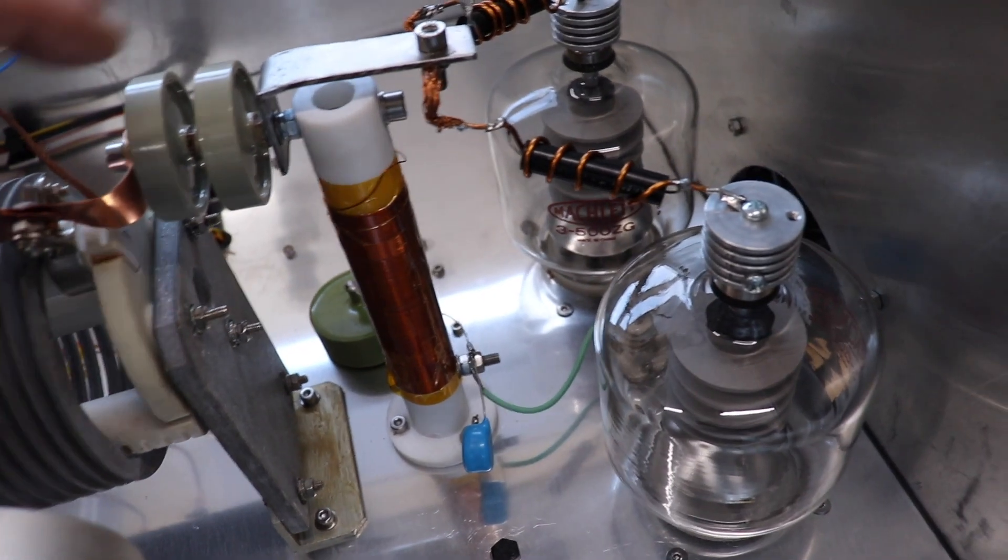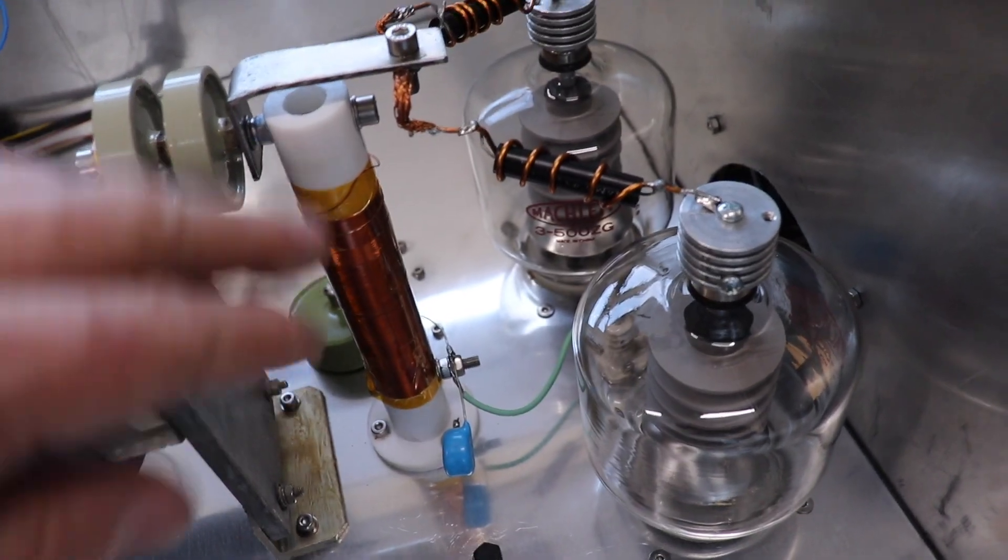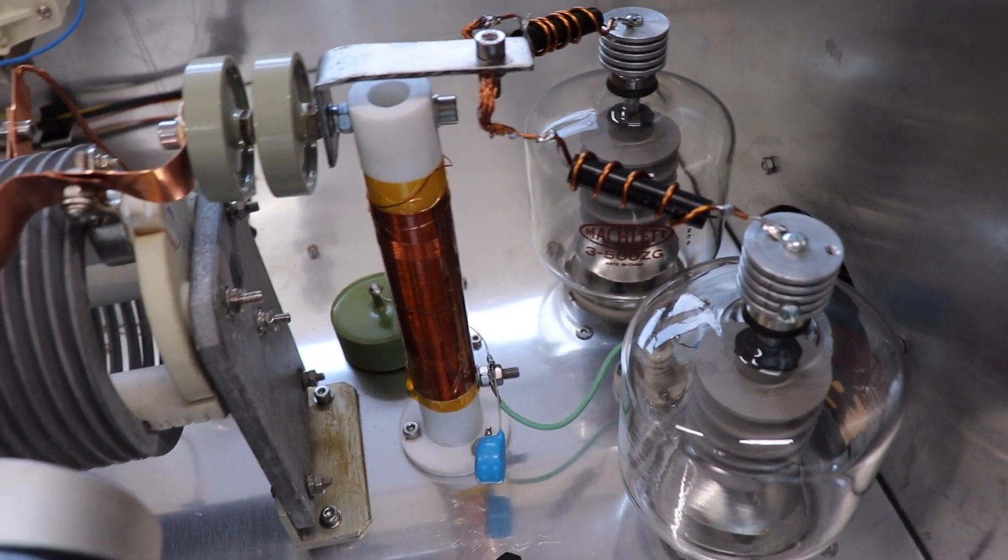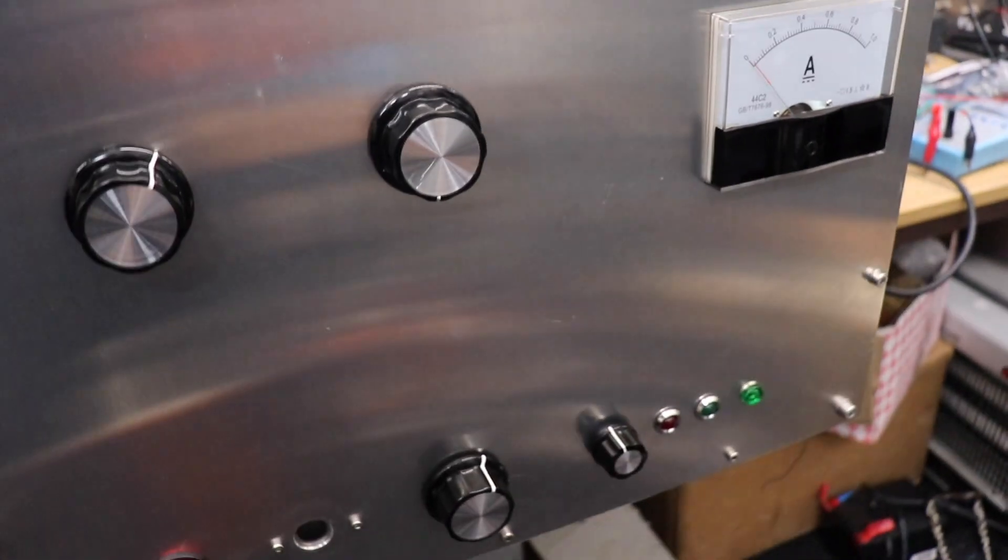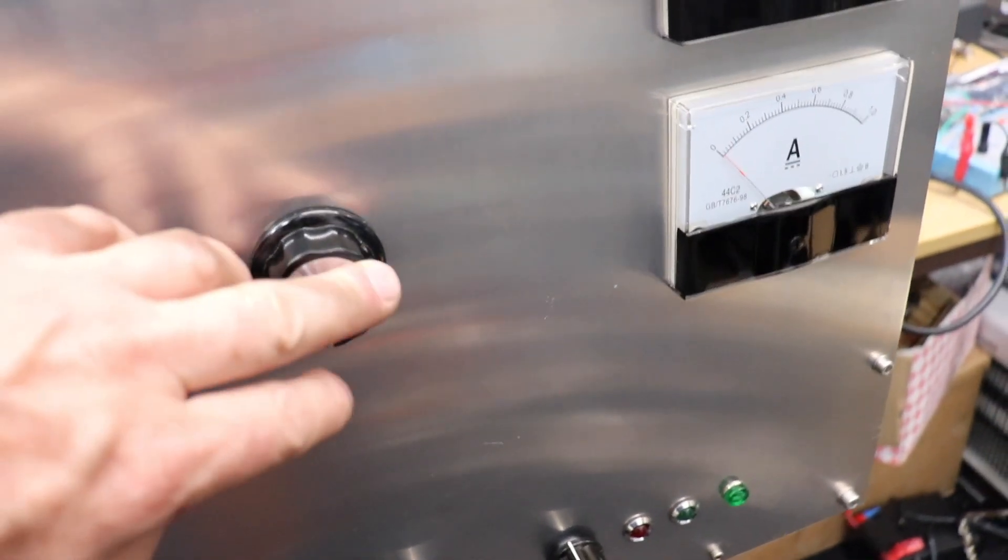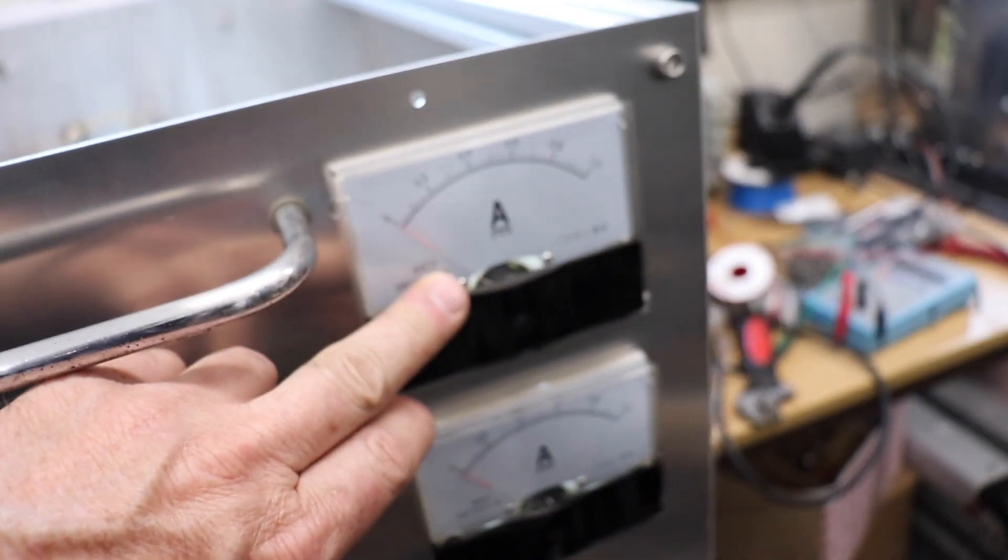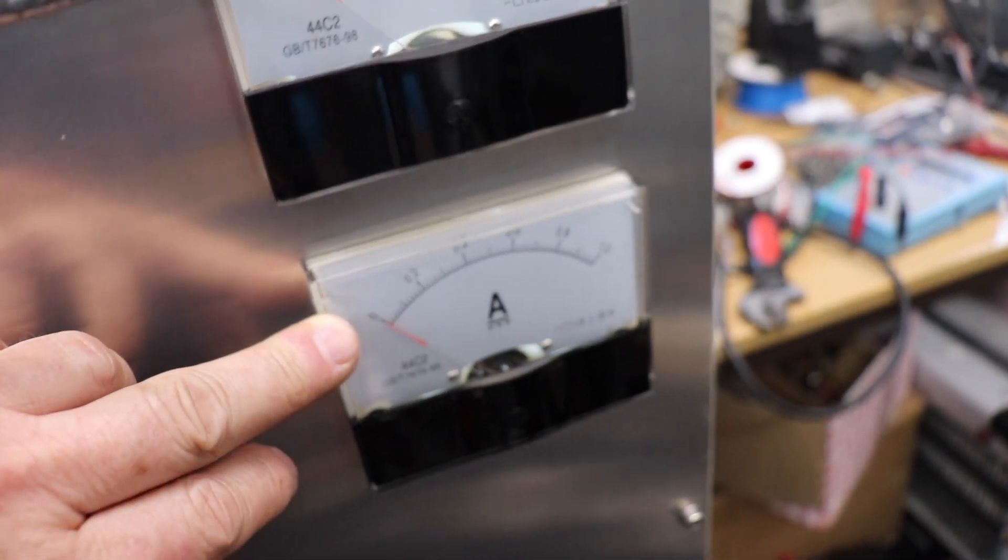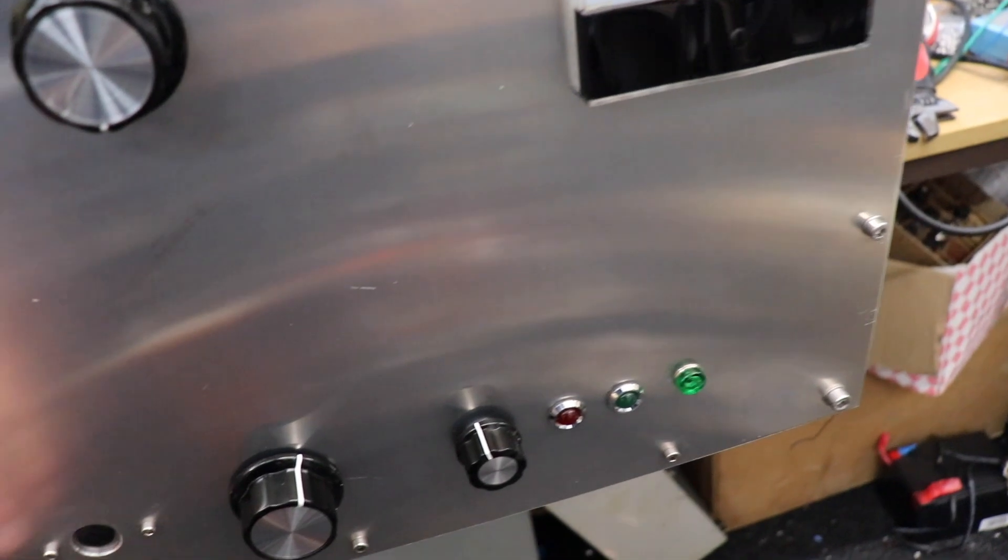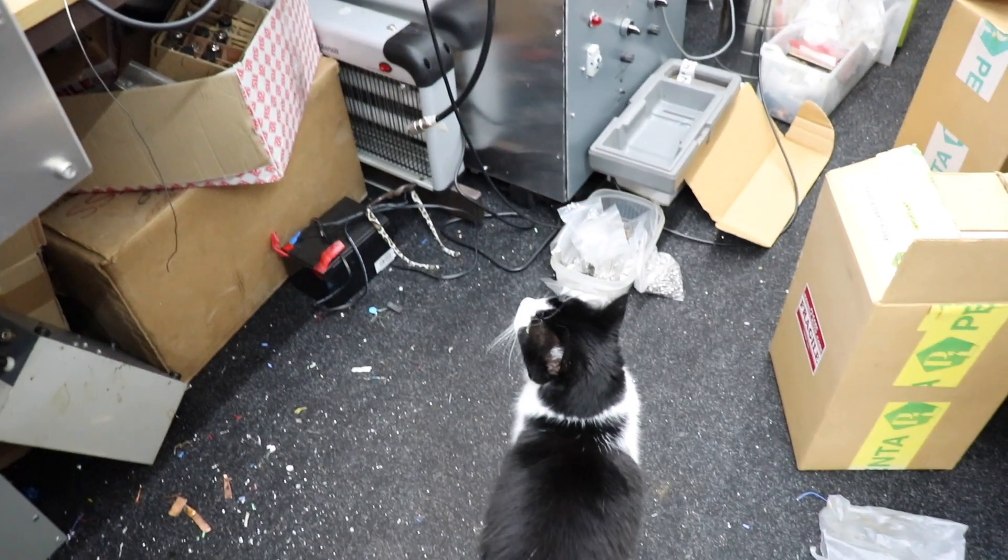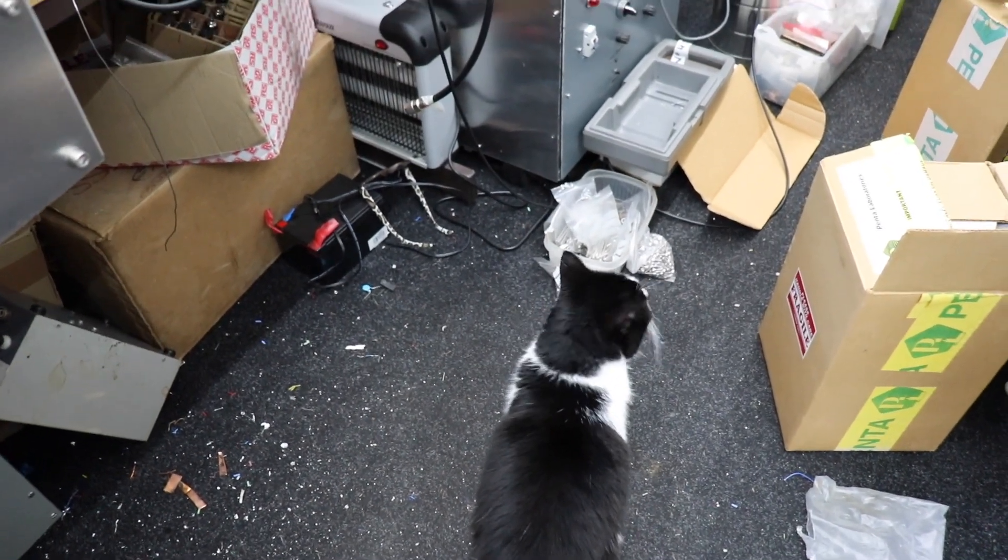Everything else is pretty conventional: blocking capacitors, plate choke, anti-parasitics, and that's it on this deck. I'll quickly turn it over. Before I turn it over, I'll just show you the front. I haven't actually put any labels on this thing yet. So those are the knobs for the tuning, load, and plate. That's our plate current, which I hope you should be able to see, that's the grid current.